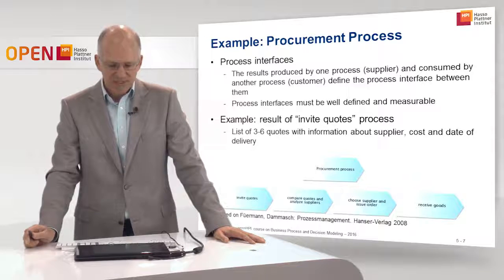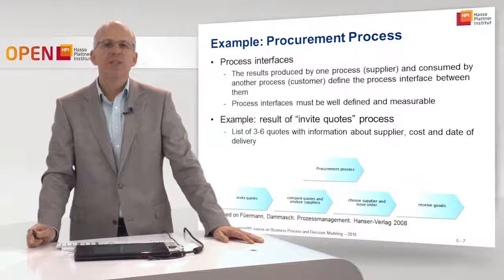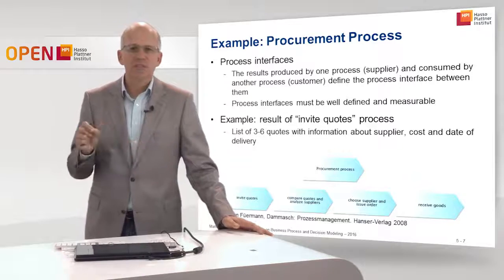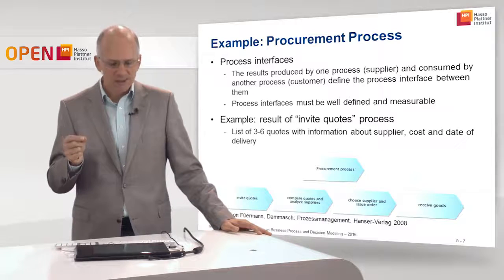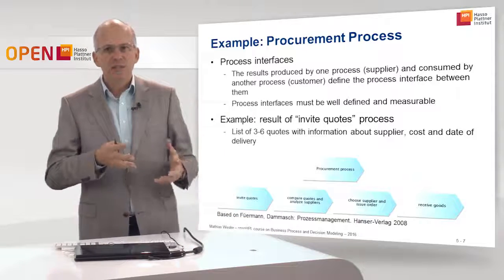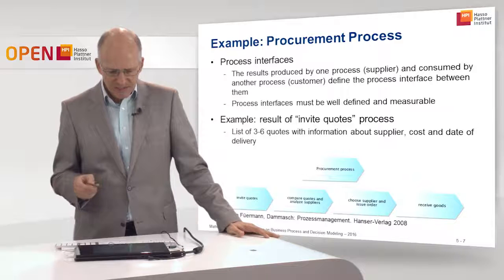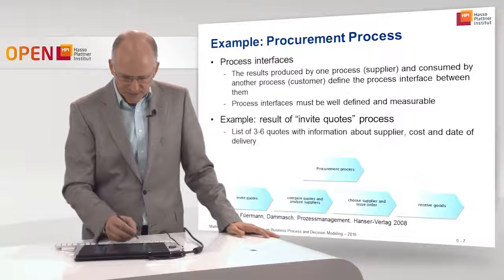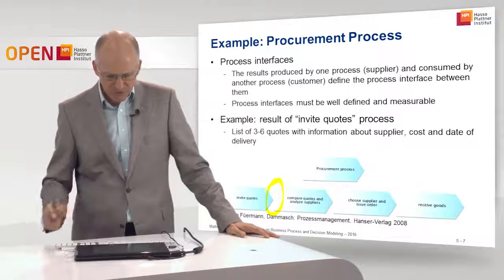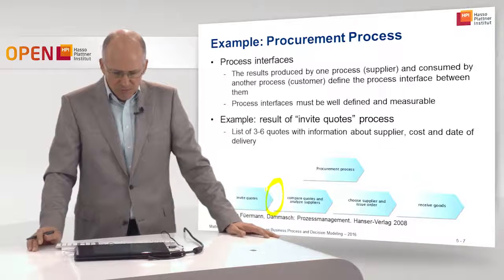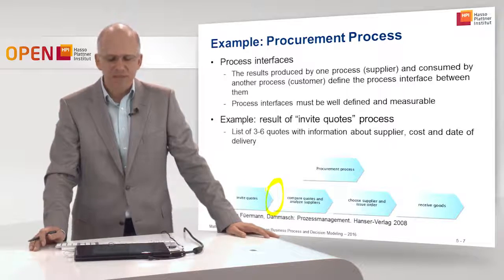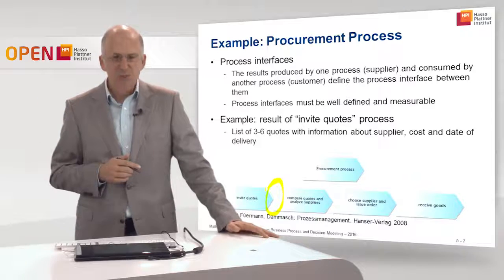The process interface must be well defined and measurable. It must be precisely clear what the customer process needs from the supplier process — exactly what input is required to fulfill the customer process's goal. For example, looking at the interface between 'invite quotes' and 'compare quotes and analyze supplier', we can specify that we need a list of three to six quotes with information about supplier cost, date of delivery, and so forth.